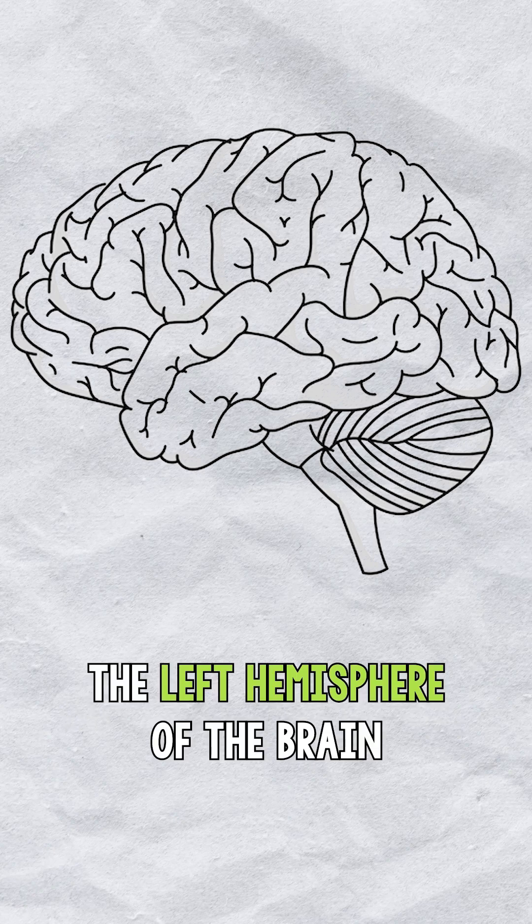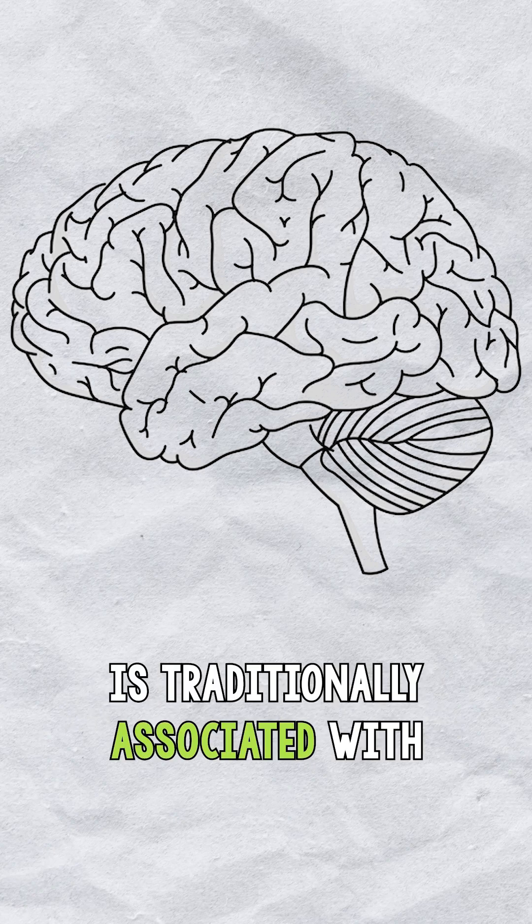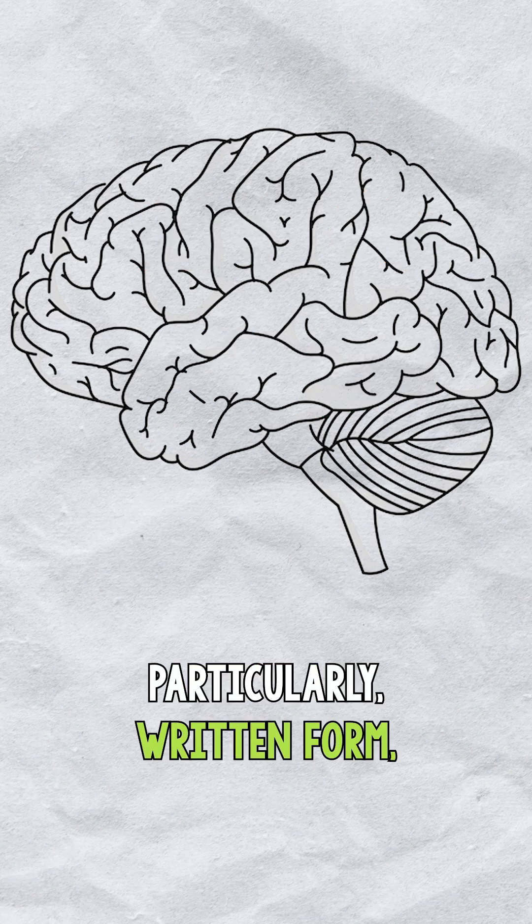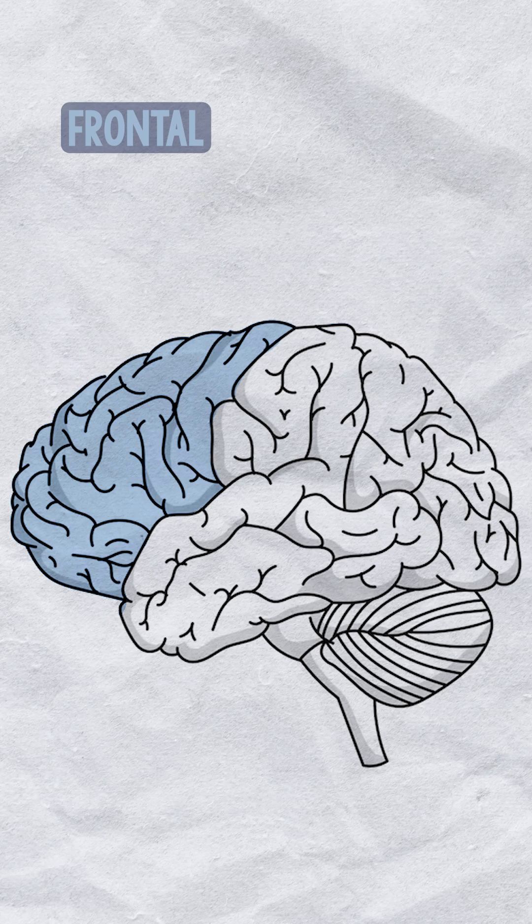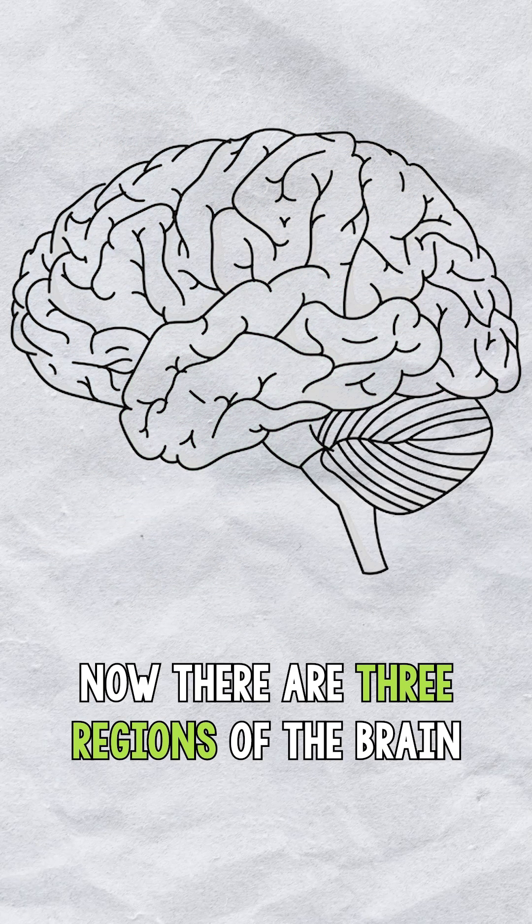The left hemisphere of the brain is traditionally associated with language, particularly written form, and it's divided into four lobes: the frontal, parietal, temporal, and occipital lobes.